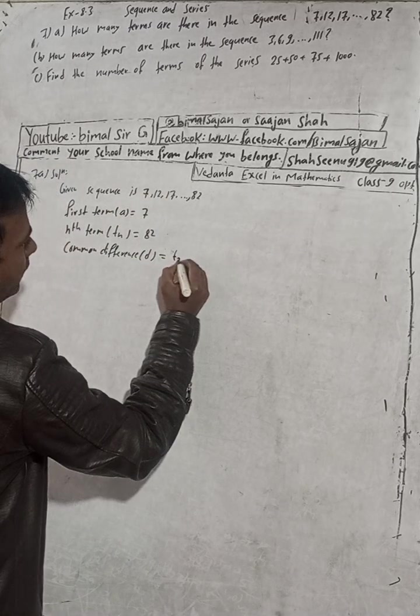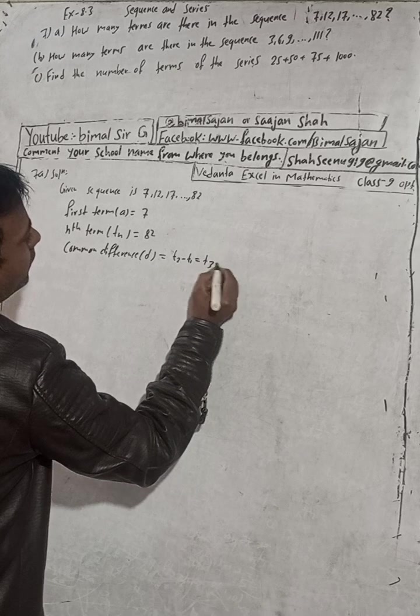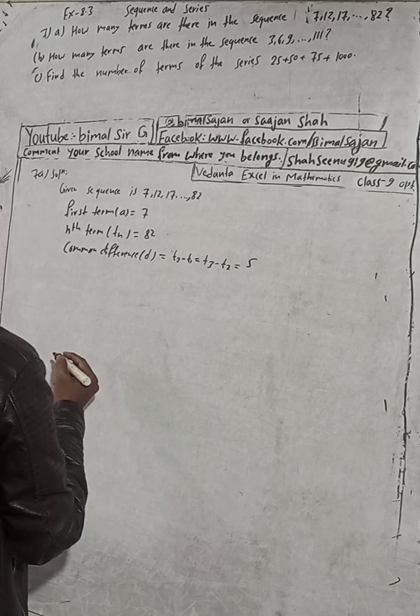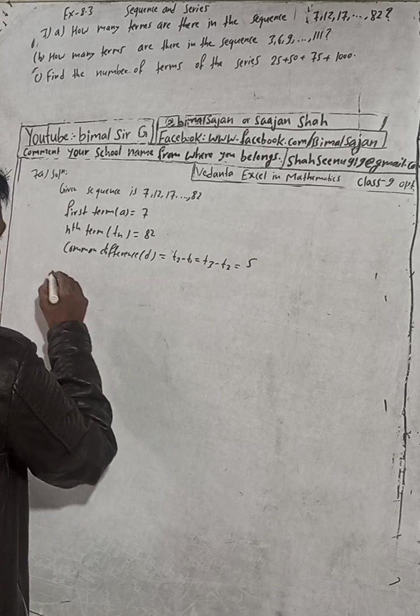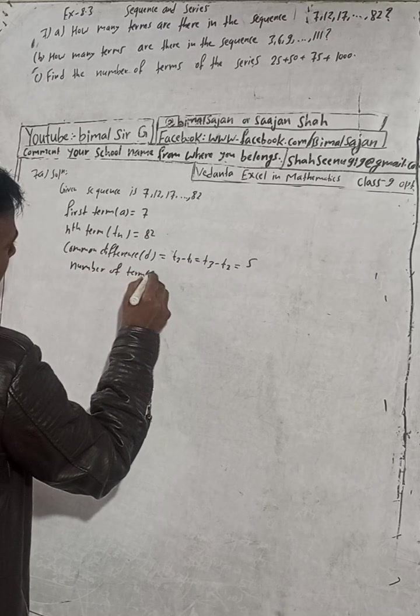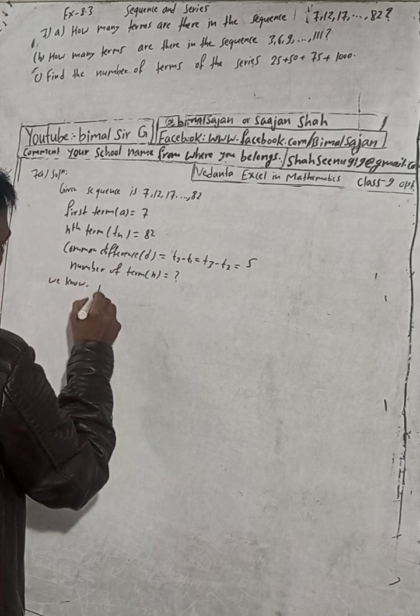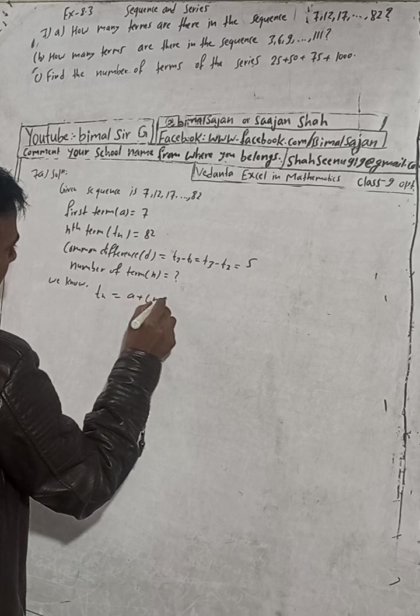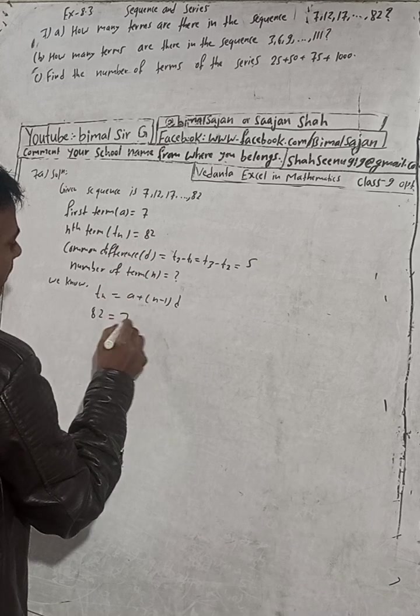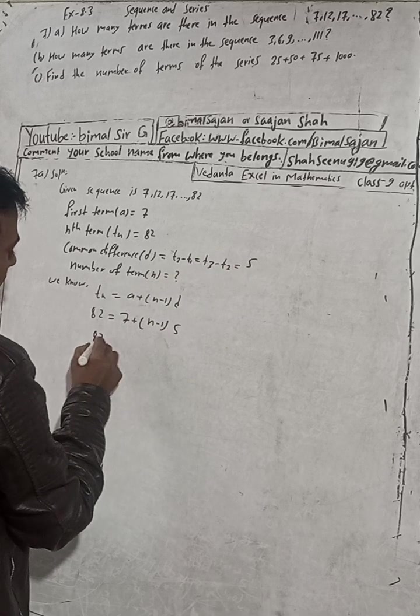Otherwise you can write t2 minus t1 is equal to t3 minus t2 is equal to 5. Now how many terms are there? So we know number of terms n is equal to, we know tn, we have formula a plus n minus 1 into d. Tn is here given 82.